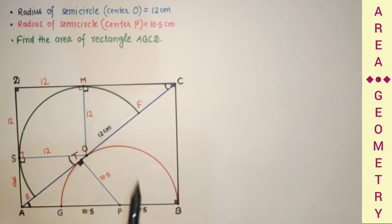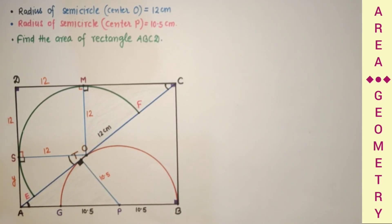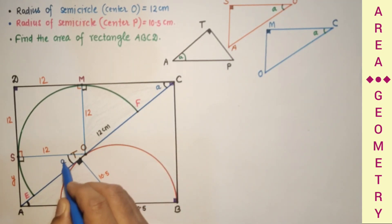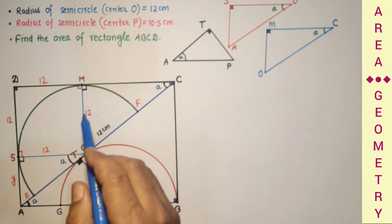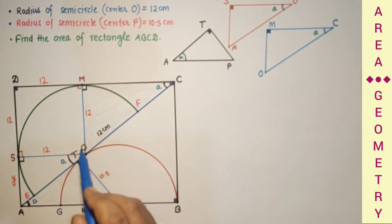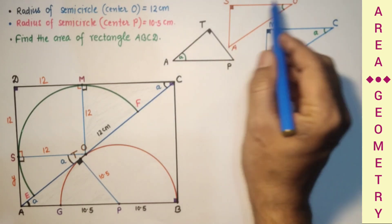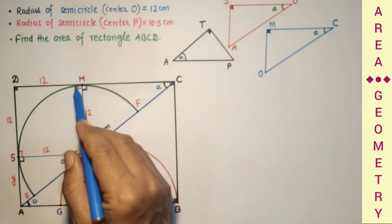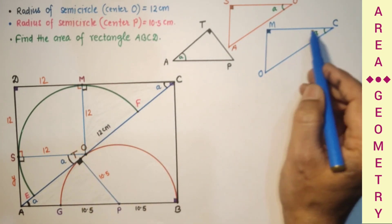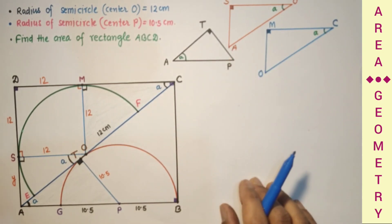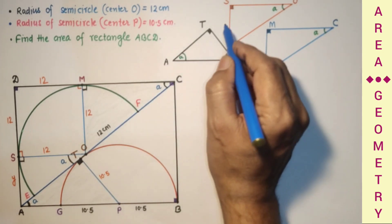So these three triangles are similar. Let us suppose this angle is A. So these three right-angle triangles are: triangle ATP with 90° and angle A, triangle ASO with S = 90° and angle A, and triangle MCO with M = 90° and angle A. By the AA test of similarity, these three are similar.